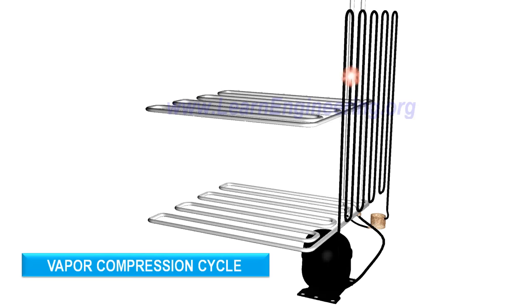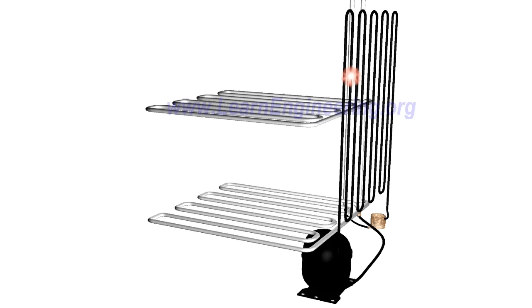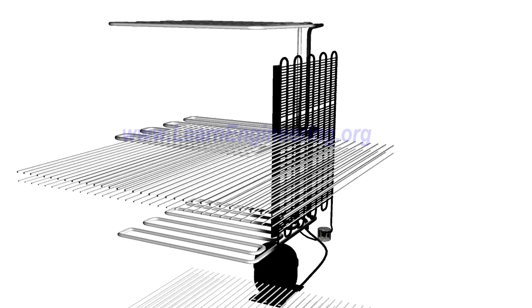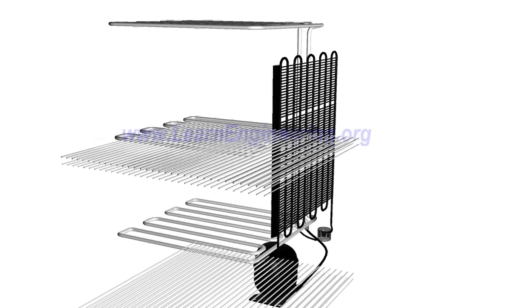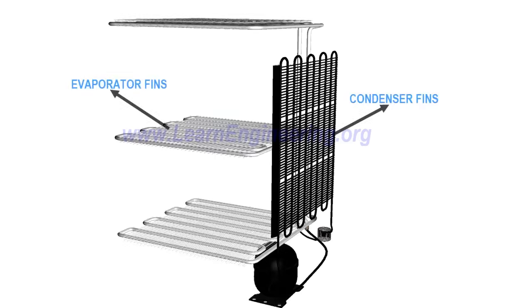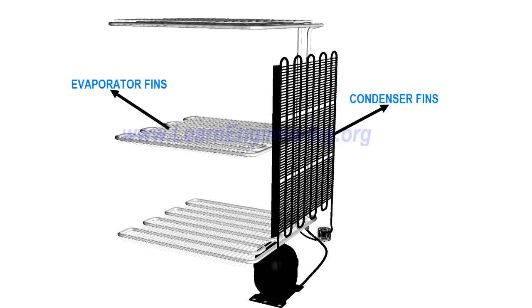We can repeat this cycle over and over for continuous refrigeration. This cycle is known as the vapor compression cycle. You can note more details of refrigerator components here. To enhance heat transfer, both evaporator and condenser have fins attached to them.